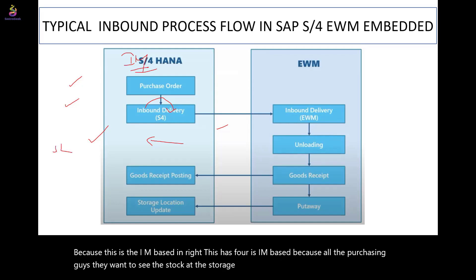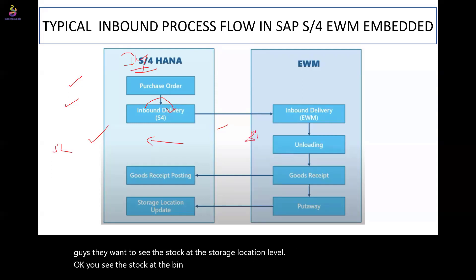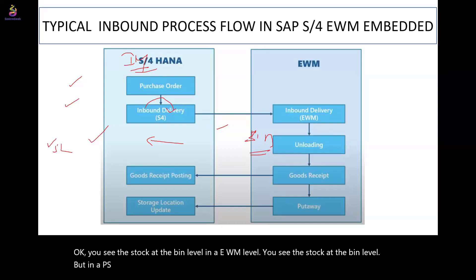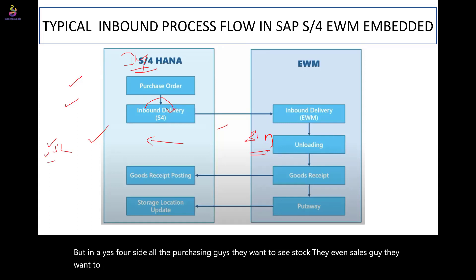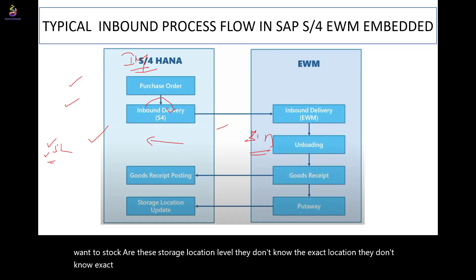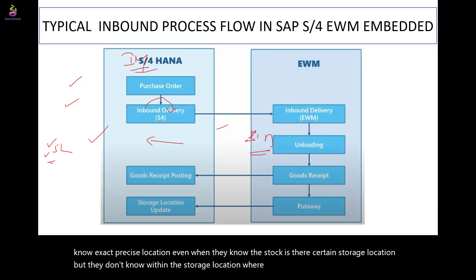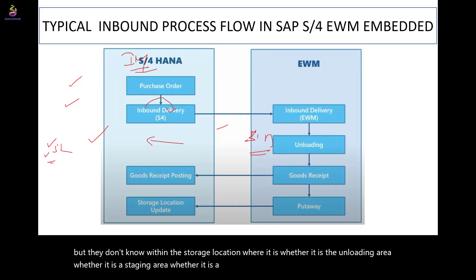This S4 is IM-based, because all the purchasing people want to see the stock at the storage location level. In EWM you see the stock at the bin level, but on the S4 side — purchasing and even sales — they want stock at the storage location level. They don't know the exact precise location within the warehouse.